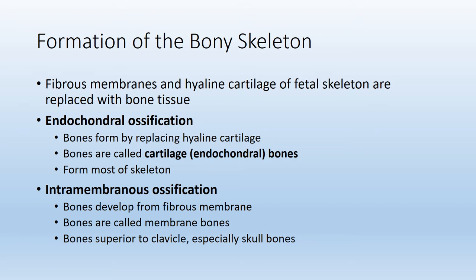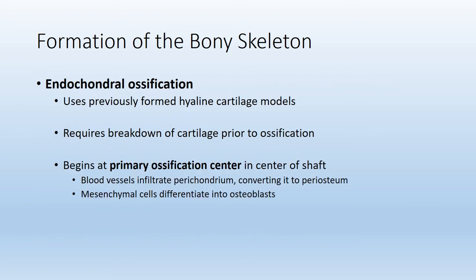The term 'chondro' or 'chondral' means cartilage. During endochondral ossification, bones are formed by replacing skeletal hyaline cartilage, and the majority of bones in the skeleton are formed this way. The other type, intramembranous ossification — think membrane — produces bones from a fibrous membrane. Most of the bones superior to the clavicle, such as the skull, develop via intramembranous ossification. For either type, ossification is not the hardening of cartilage but rather the replacement of cartilage with bone tissue.